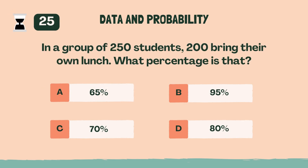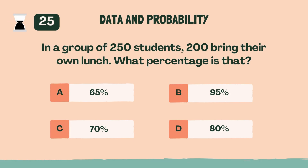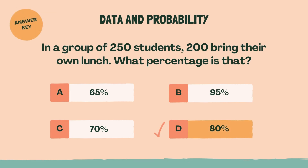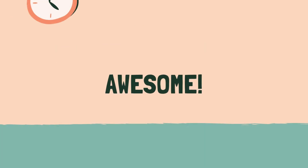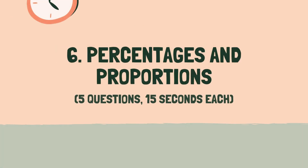In a group of 250 students, 200 bring their own lunch. What percentage is that? D, 80%. Awesome. Last category coming up.